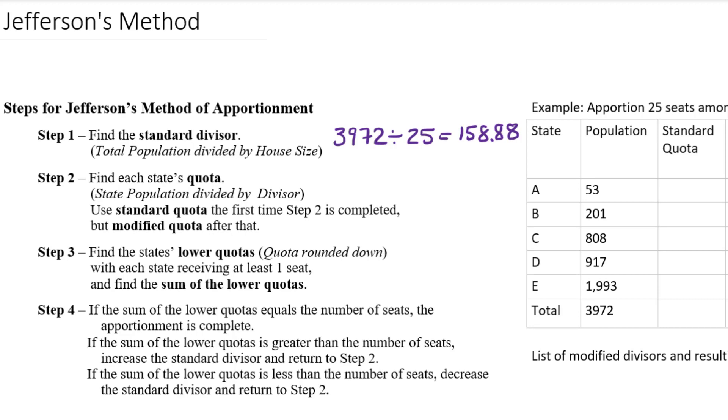And what this is telling you is that for every 158.88 people, there's exactly one seat.